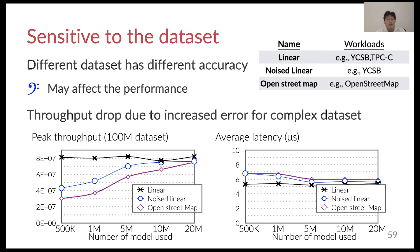Since the machine learning approach is sensitive to whether it can correctly fit the dataset, we further evaluate XDoor using different datasets. Specifically, we use two synthetic datasets — linear and non-linear — and one real-world dataset, OpenStreetMap. We use a workload similar to YCSB-C. We can see that accuracy has more effect on XDoor's peak throughput when there are insufficient models to fit these datasets. Consequently, XDoor may need to search more keys to find the given key, resulting in more RDMA payload read. To reduce the error, XDoor may use more models to fit the dataset. The accuracy is less sensitive to the latency, since RDMA is less sensitive to the payload size.